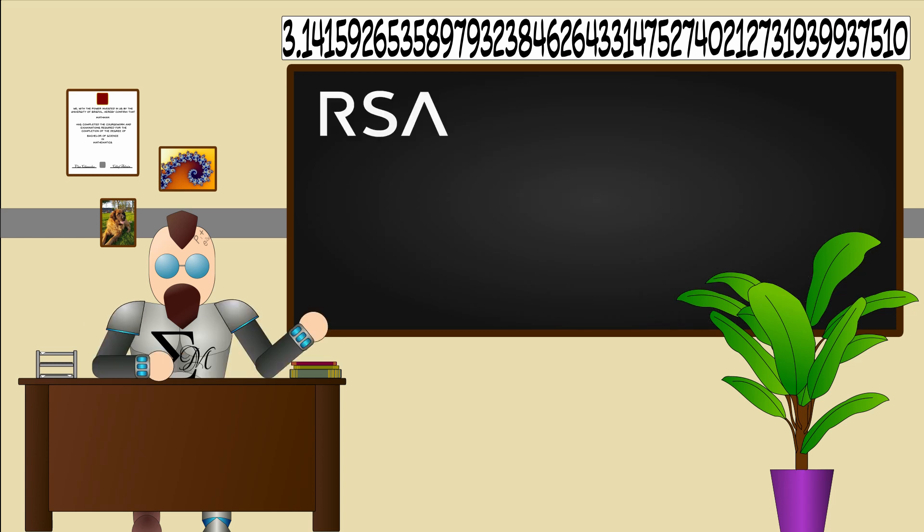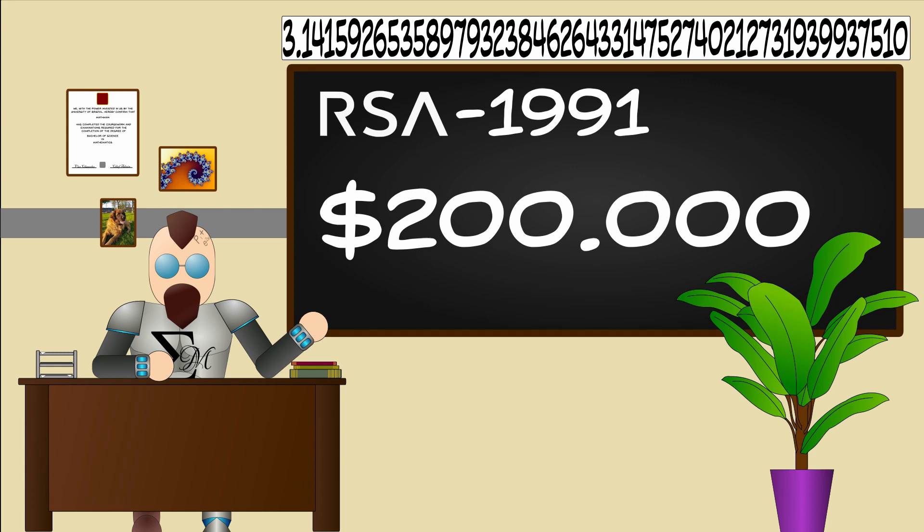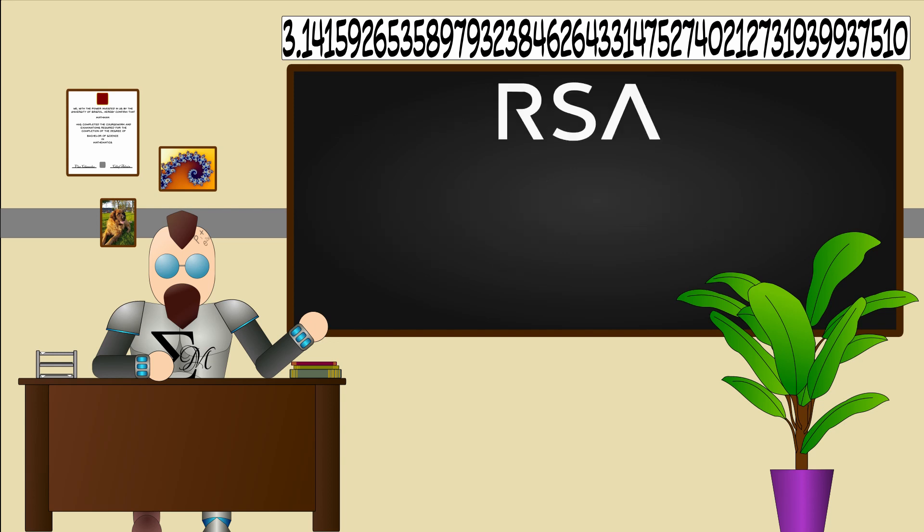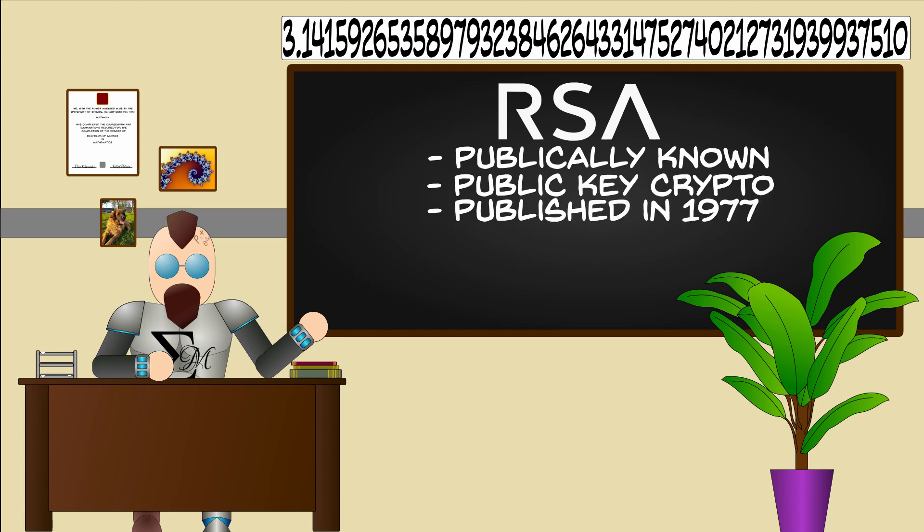It was set by RSA Laboratories as a factoring problem in 1991, with a money prize for completion of $200,000. Despite the prize now being defunct, it is still very interesting mathematically. This is where the RSA bit comes in. RSA, after its creators Rivest, Shamir and Adleman, was the first publicly known public key cryptosystem published in 1977.